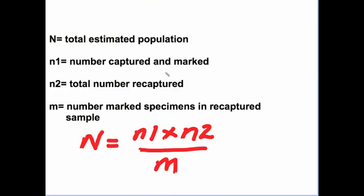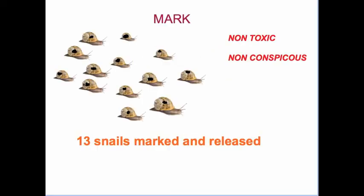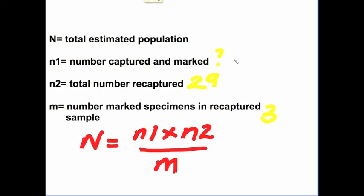What about N1? You will recall from the earlier part of our experiment that N1, the number of marked snails, was 13. So let's bring 13 into our formula and now you can solve.